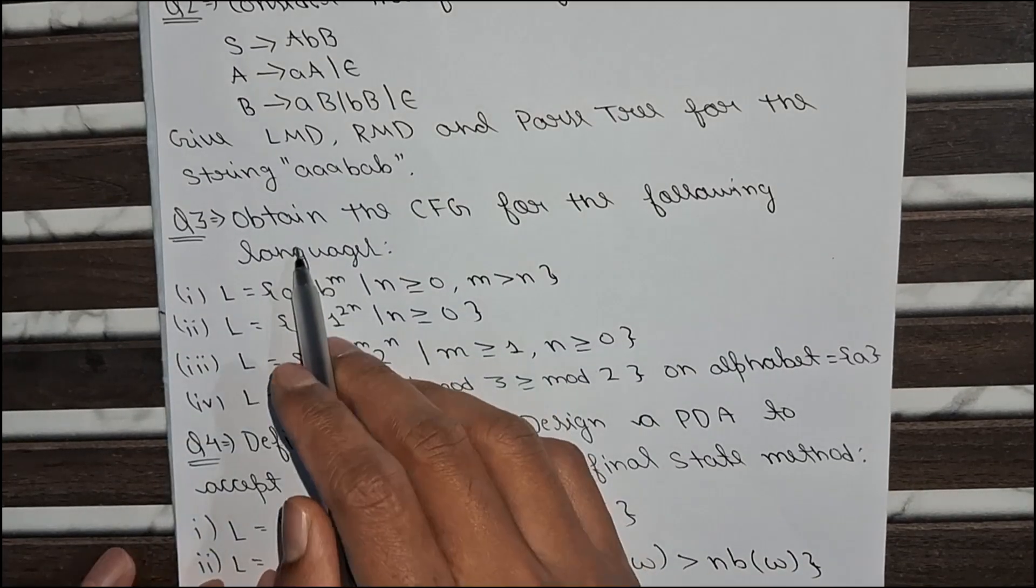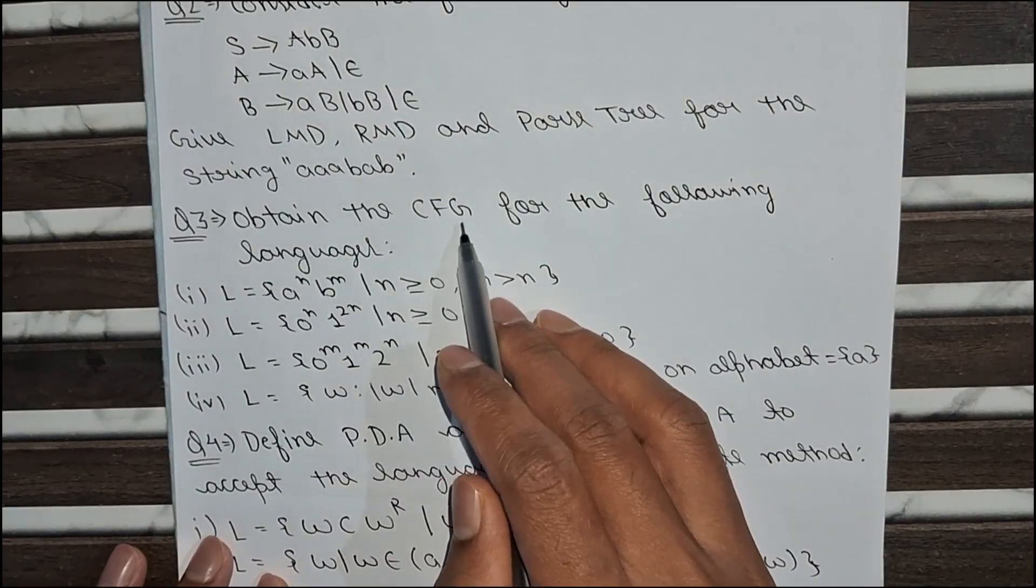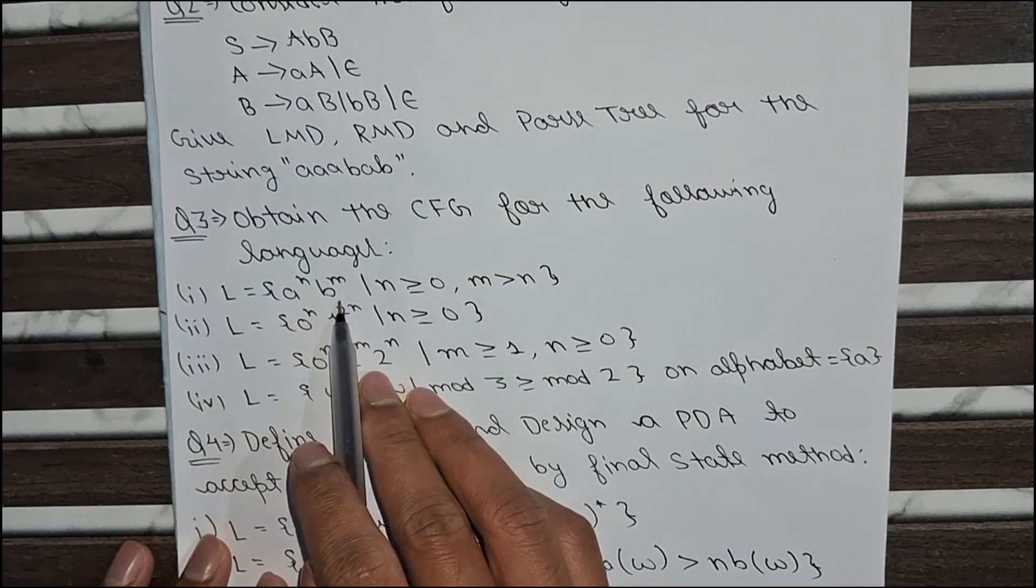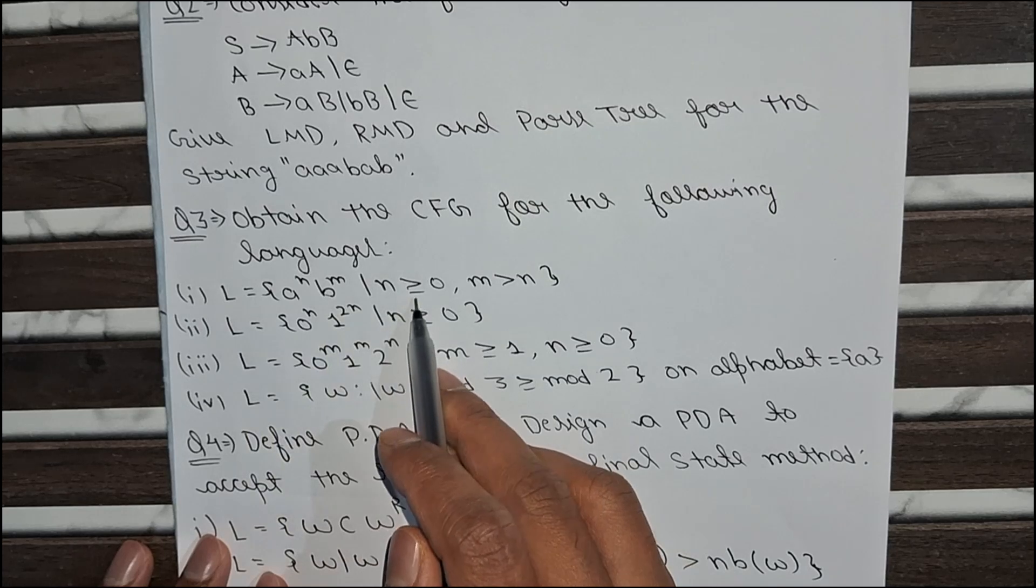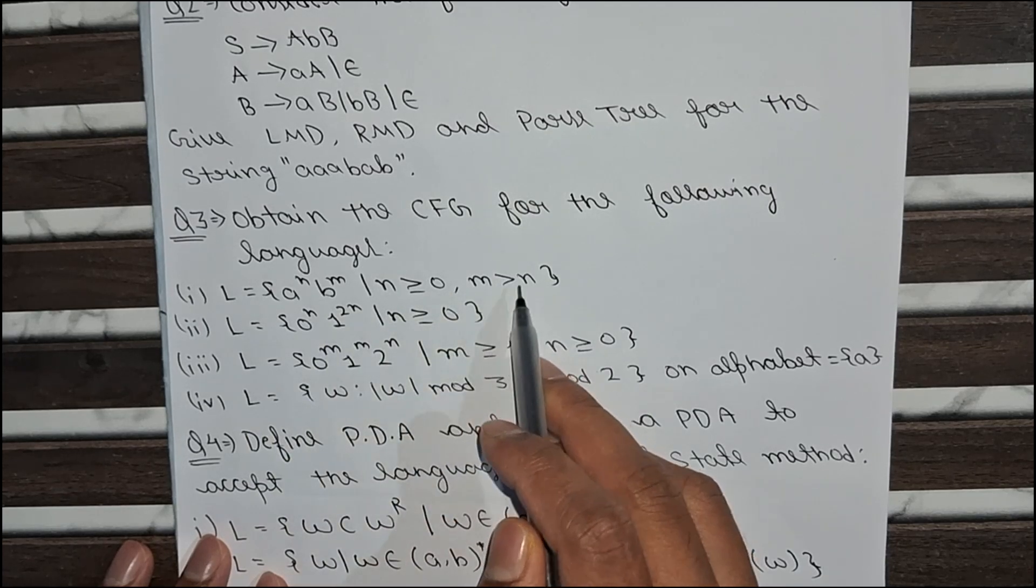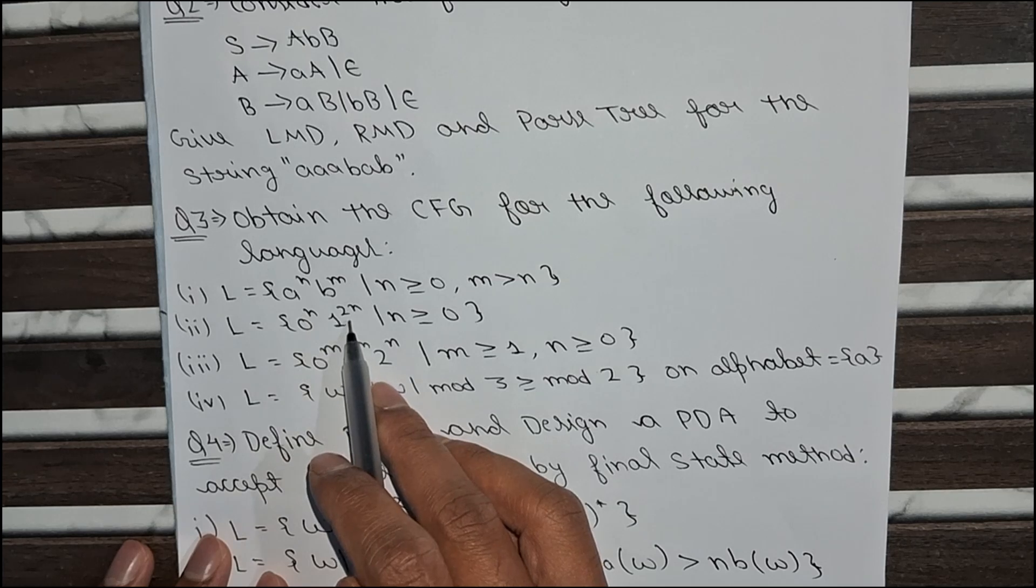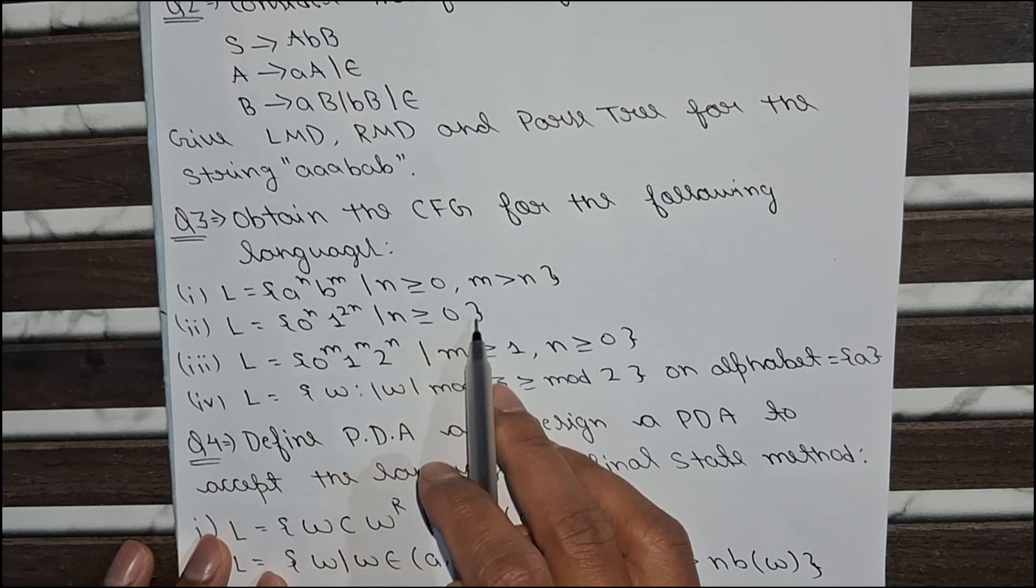Now the third question is obtain the context free grammar for the following languages. First language is given as a to the power n, b to the power m where n is greater than or equal to 0 and m is greater than n. Second language is 0 to the power n, 1 to the power 2n where n is greater than or equal to 0.